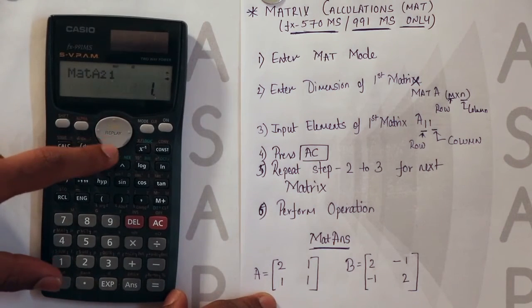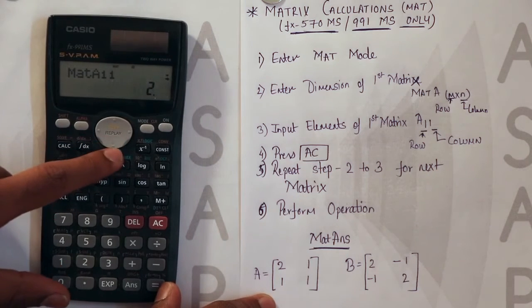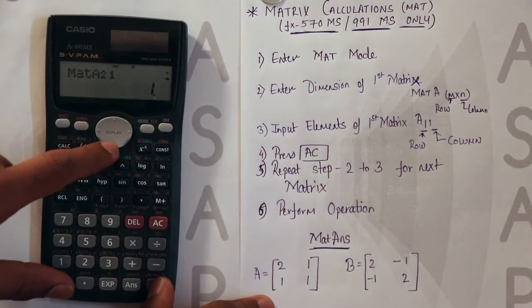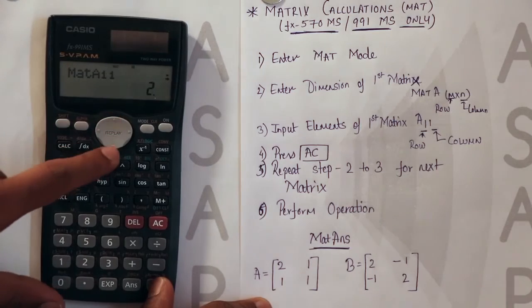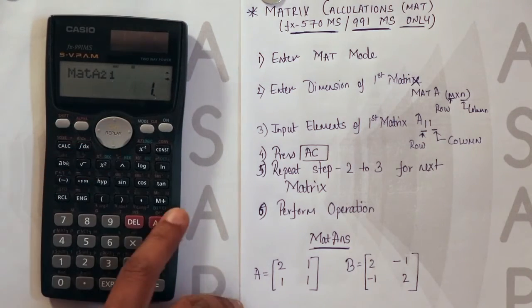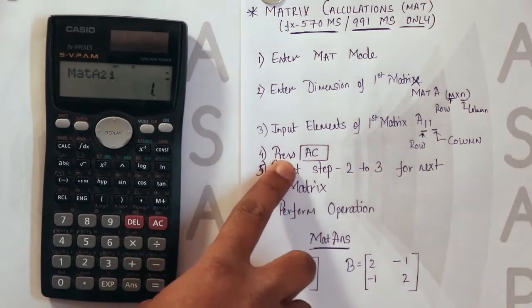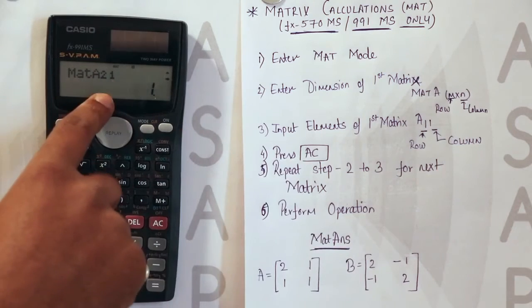Now you will see this matrix which you have entered. You can cross check the elements by using the up and down arrow keys. Now we will press the AC button since it is in the matrix editor mode.